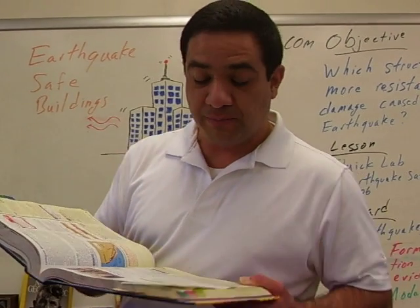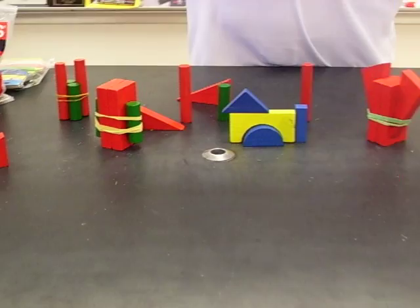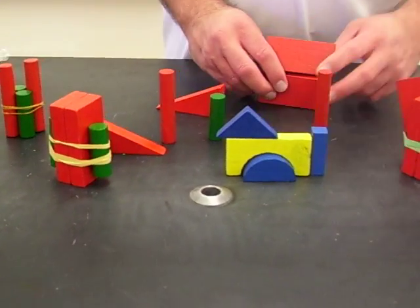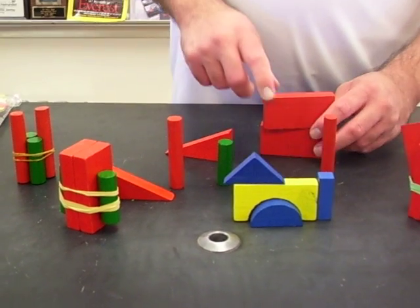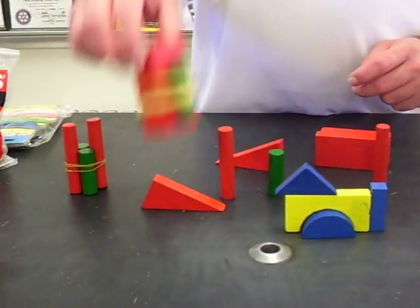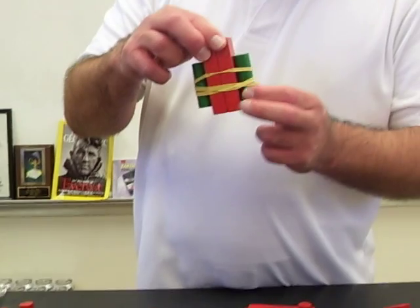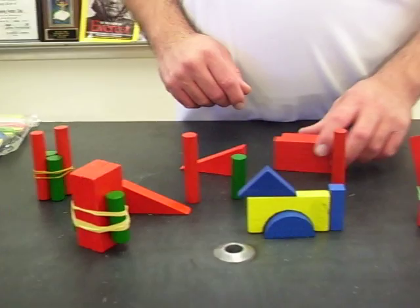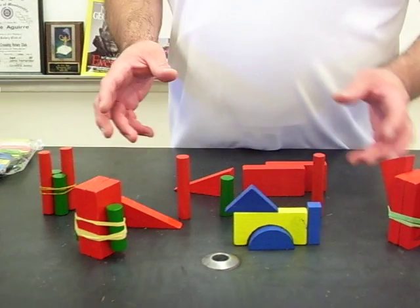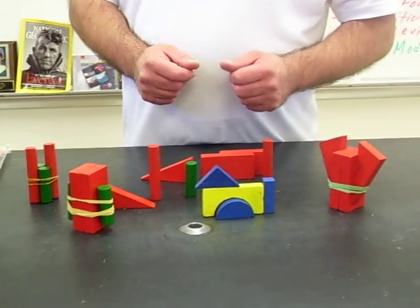What the students did is they went ahead and built some structures without rubber bands and then pounded the table, so they probably did fall. Then secondly they used rubber bands to reinforce the structures, and they did a little competition to see who could build the biggest structure using the least amount of rubber bands.